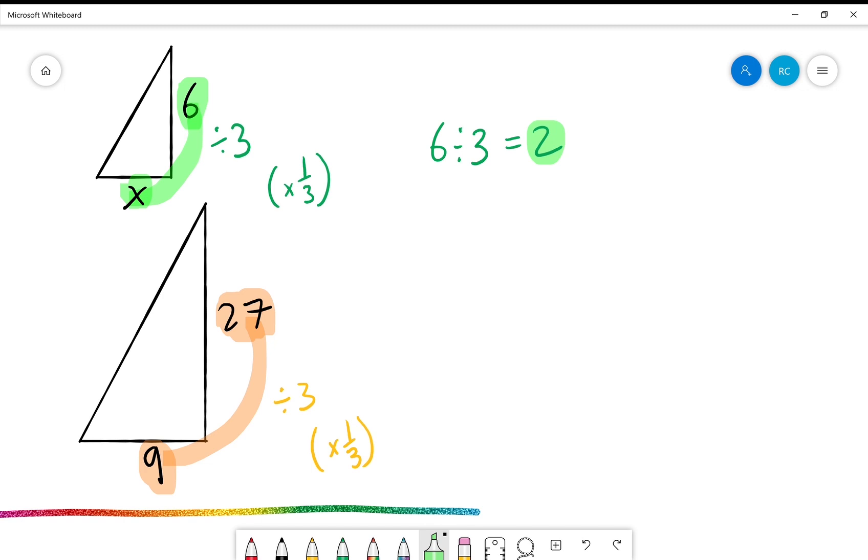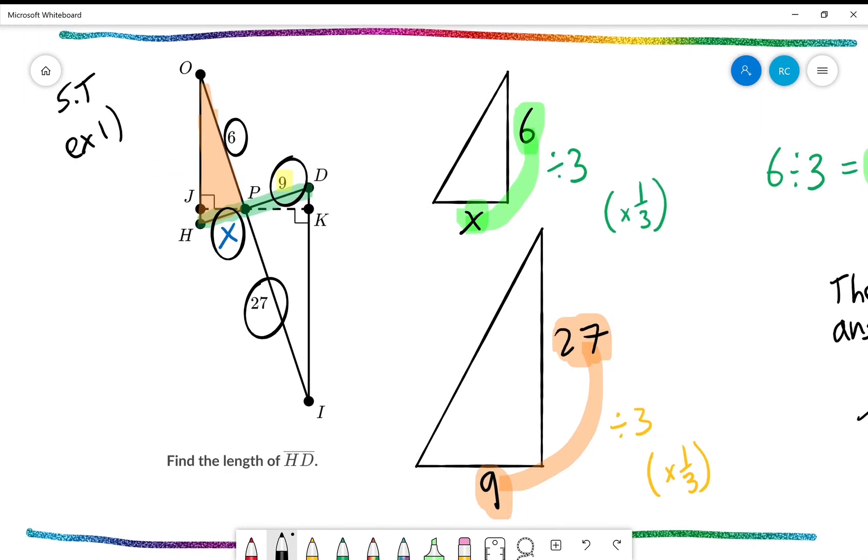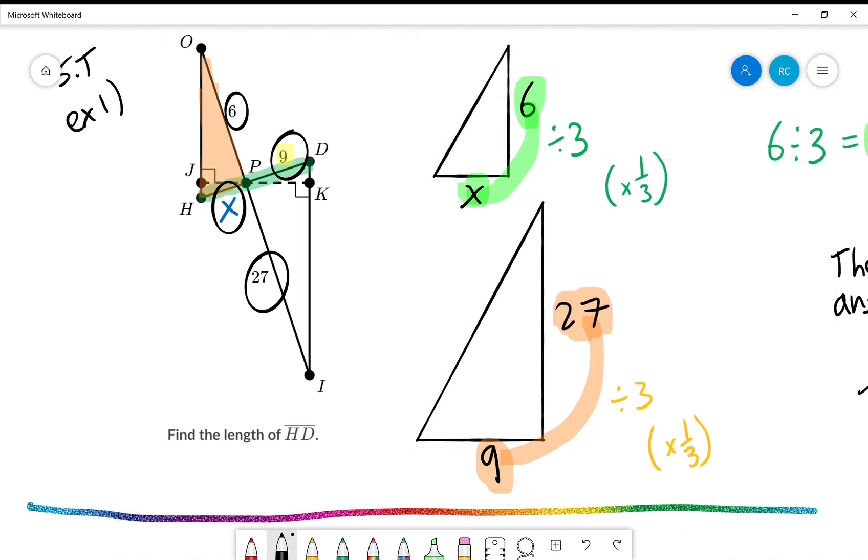So 2 is our answer, right? Well, no. That 2 is only part of the answer. If we go back to the original question, we notice that we're looking for the length of HD. We found the length of HP, this small section right here. So we just add the two together. The length of HD.